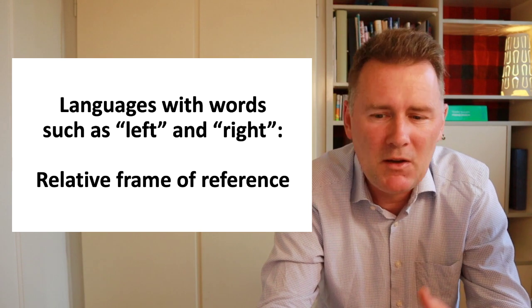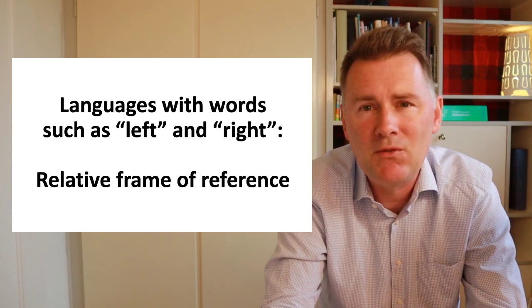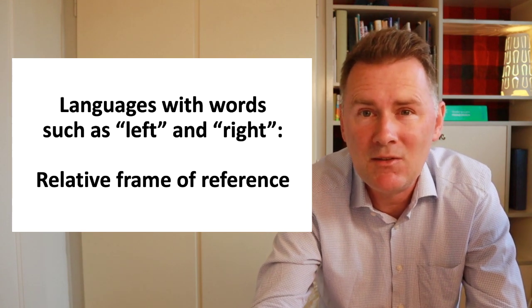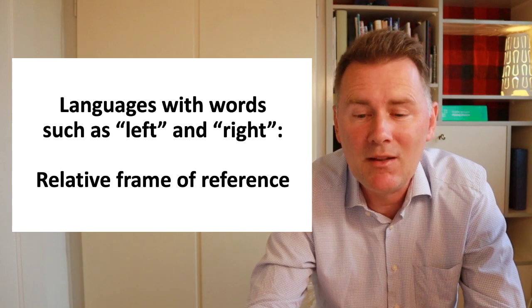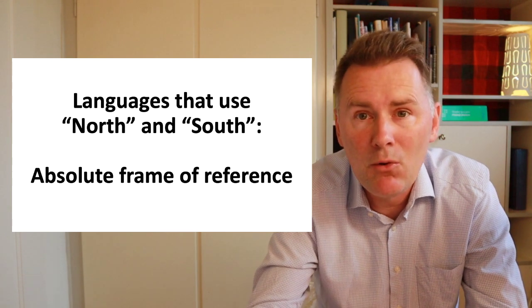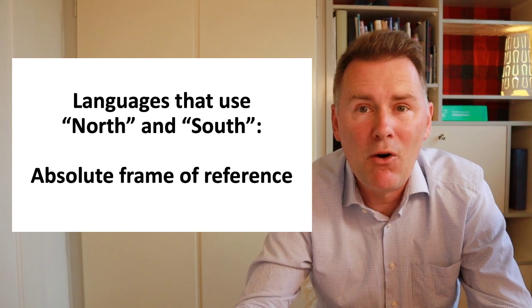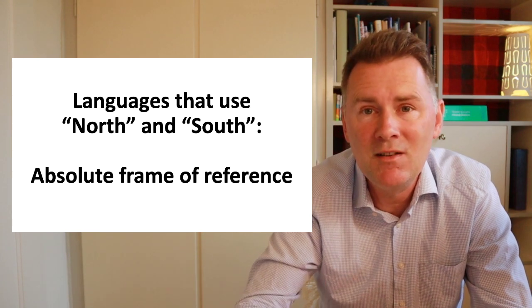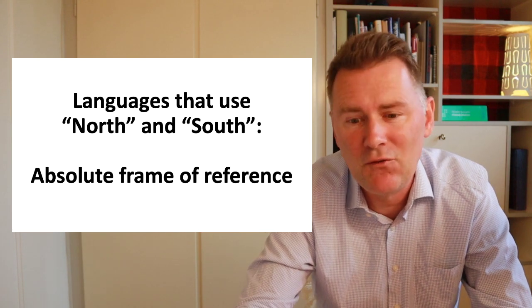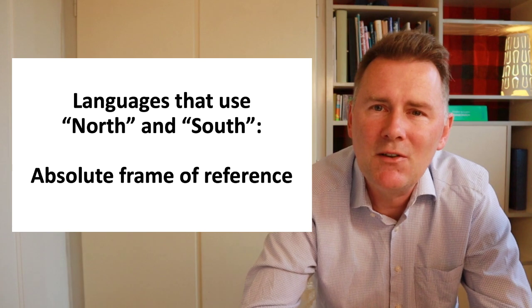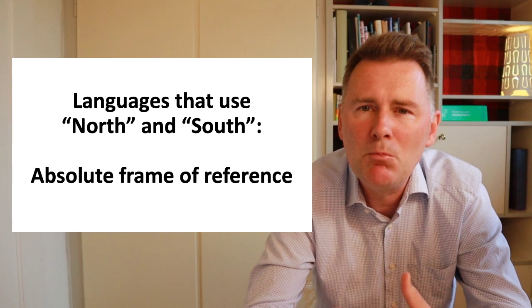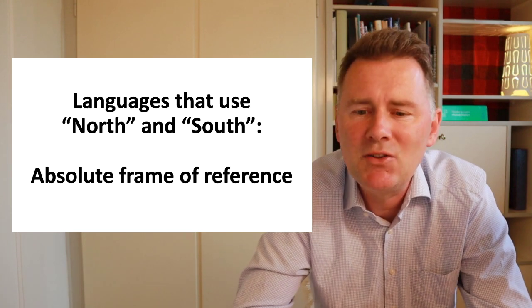And you will be wondering, if Tzeltal and Longu don't have words for left and right, then how do they actually indicate where something is in space? The answer would be that they use absolute directions such as north and south. And they would do that not only for, let's say, the expression of the village being to the north of the city, but rather they would also say that, hey, we have to move the couch a little bit further to the west. Now, for speakers of languages that use left and right, it is a major mystery how someone can point to north and south in every situation they're in.